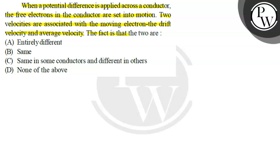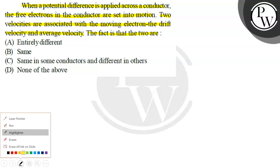The fact is that the two are: A — entirely different, B — same, C — same in some conductors and different in others, D — none of the above.